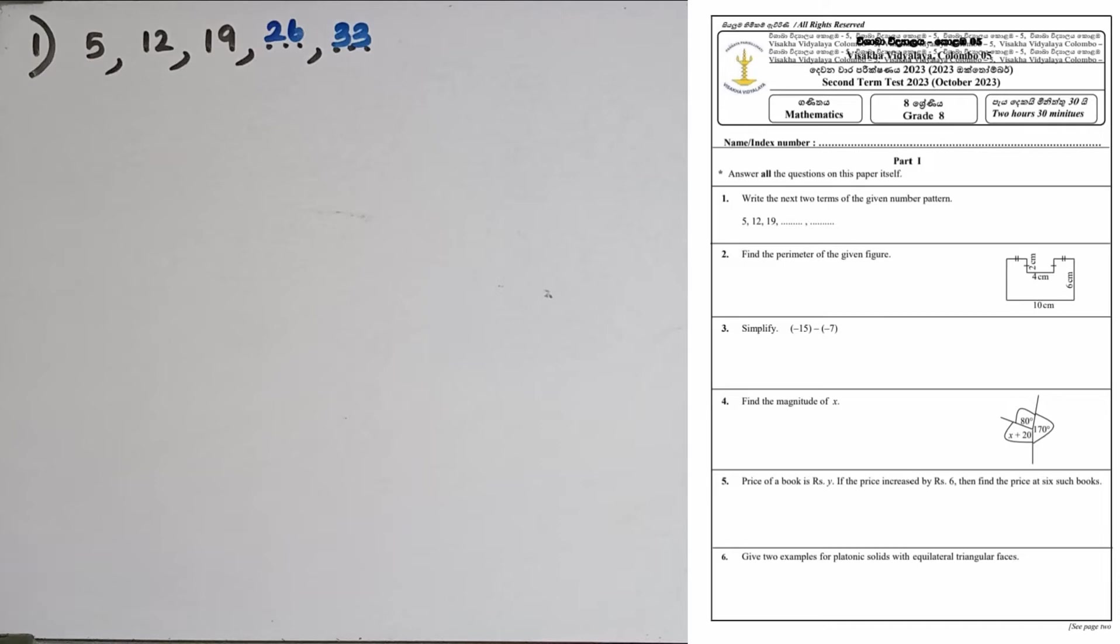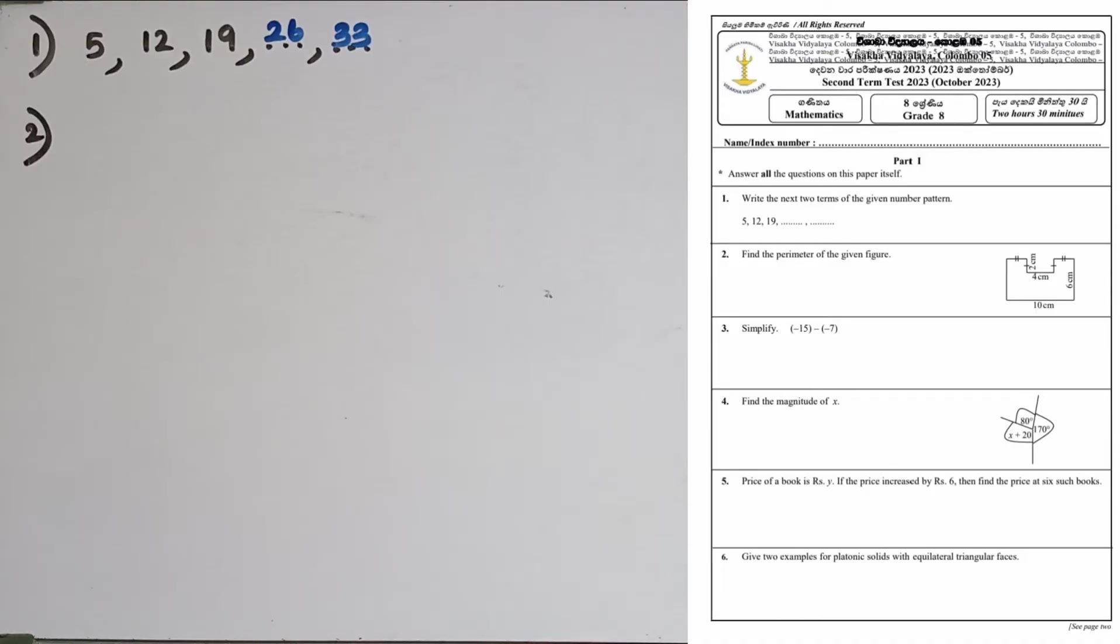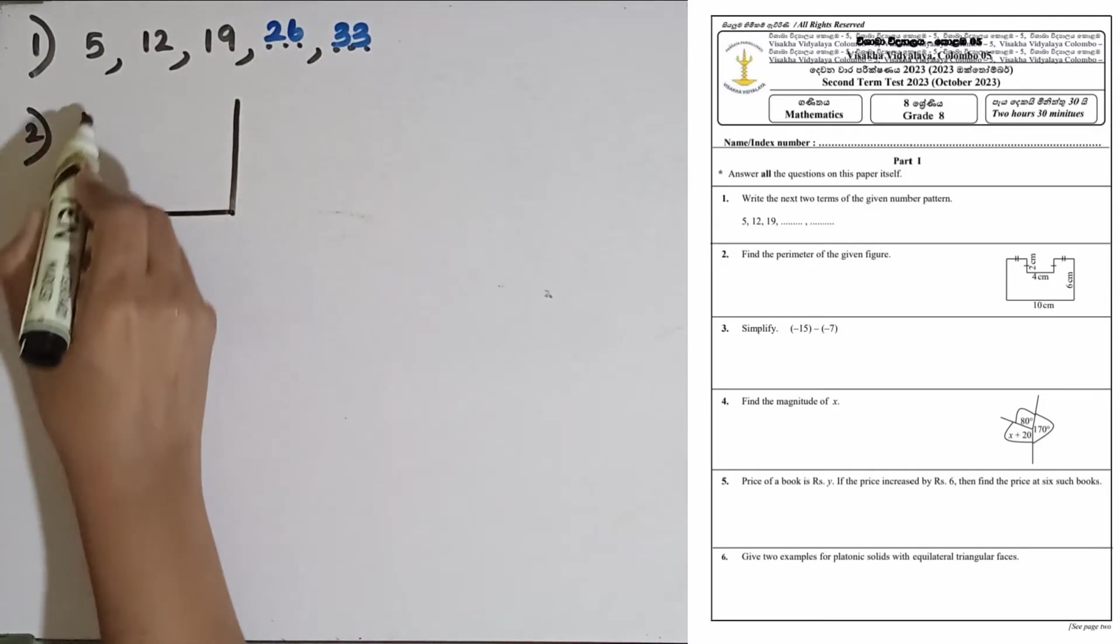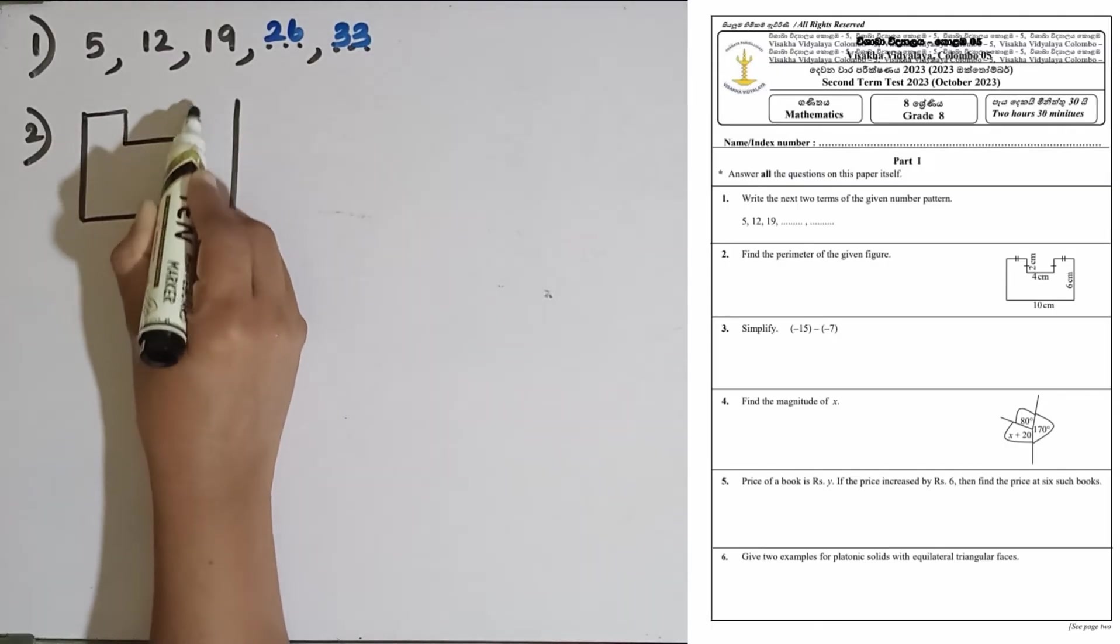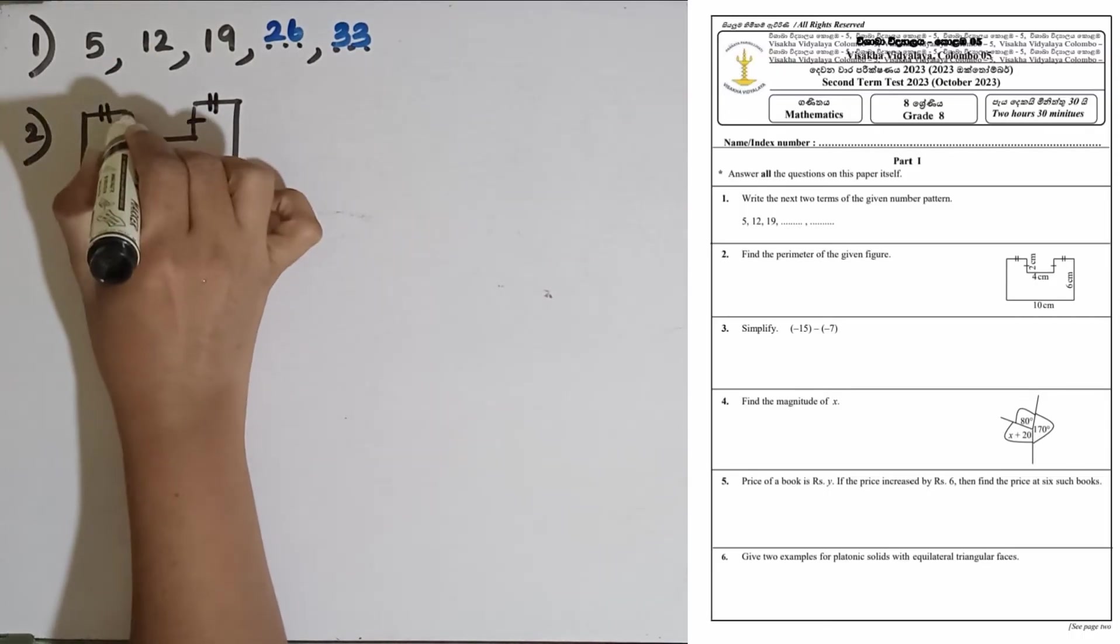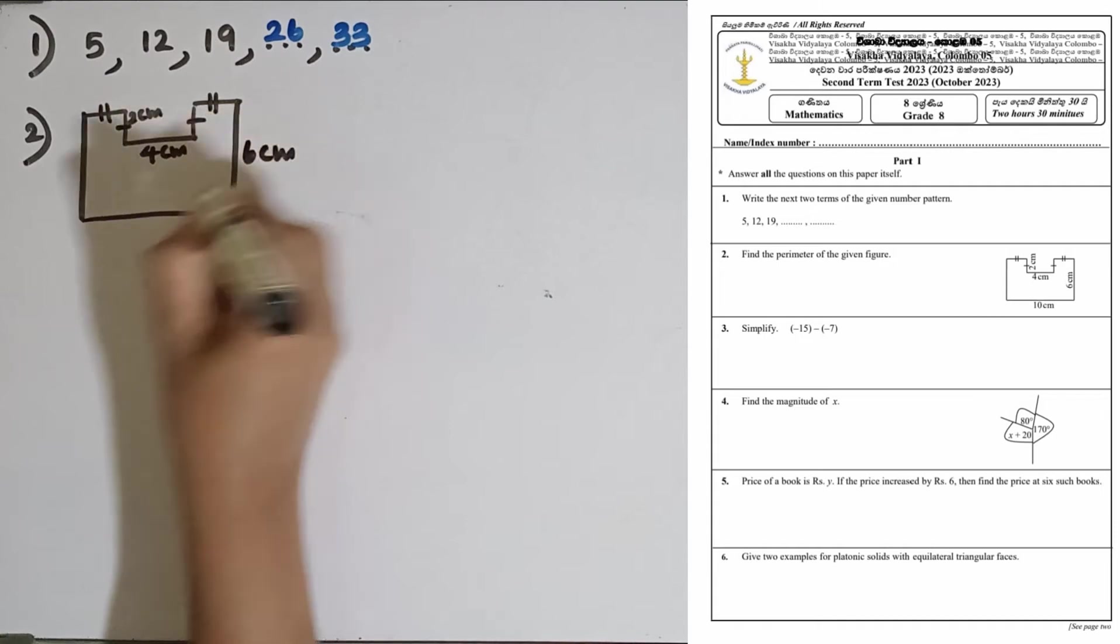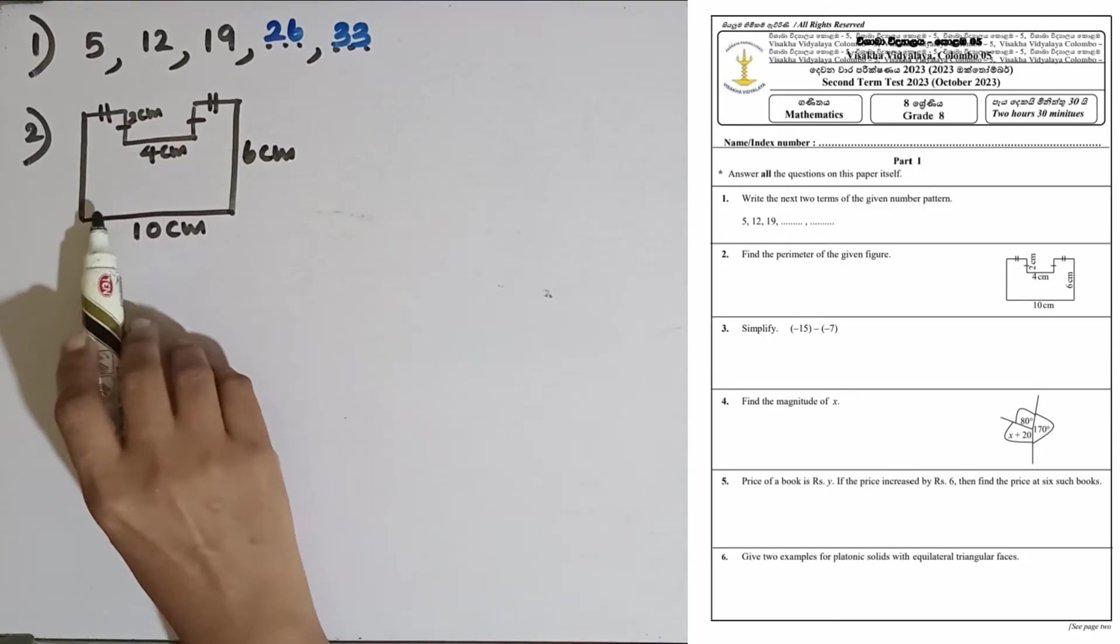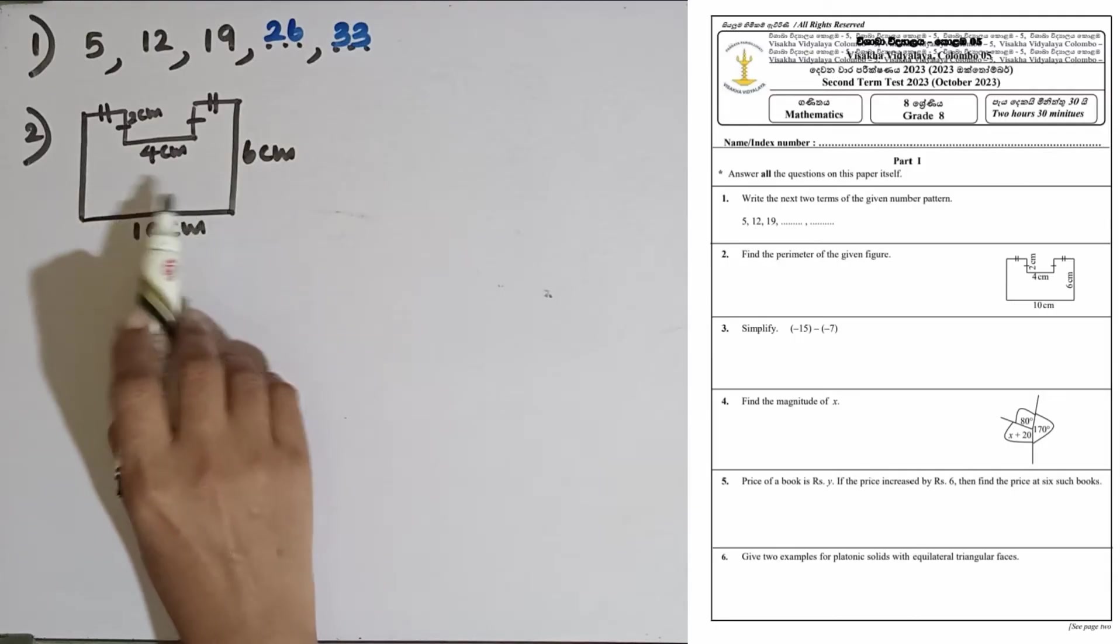Question number 2: Find the perimeter of the given figure. If I draw this figure again, this is the figure given for us. These sides are equal in length. One is 2 cm, then this side 4 cm, this one 6 cm, and this 10 cm. This length is equal to this one according to the symmetry of this figure.